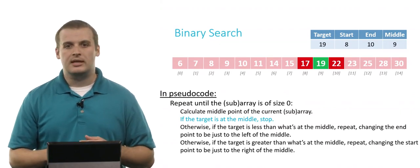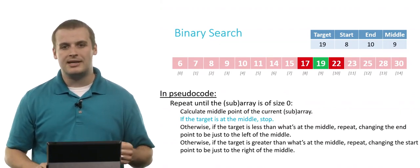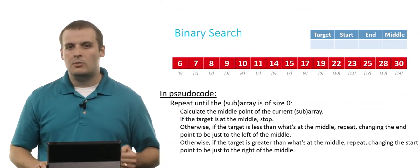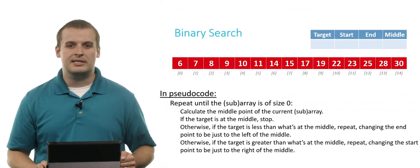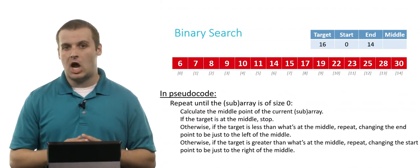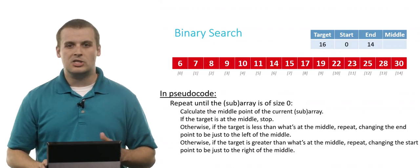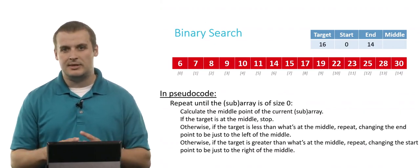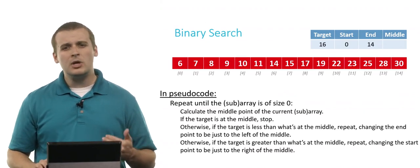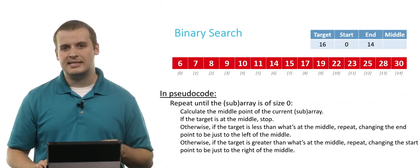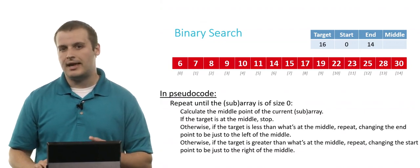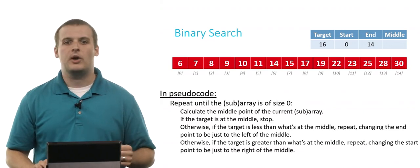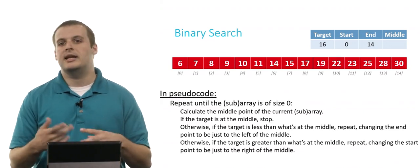We know this algorithm works if the target is somewhere inside the array. But does it work if the target is not in the array? Let's try looking for the element 16, which visually we can see does not exist anywhere in the array. Start is 0, end is 14. We want to make sure this algorithm won't just leave us stuck in an infinite loop.